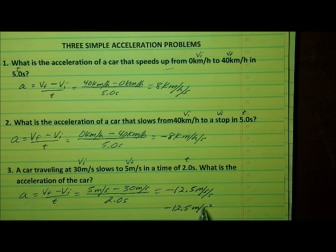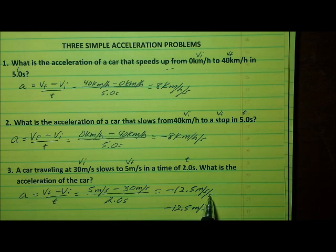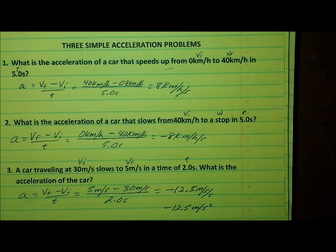This means that while this car is slowing down, it loses 12.5 meters per second every second. And those are three simple acceleration problems. Thank you.